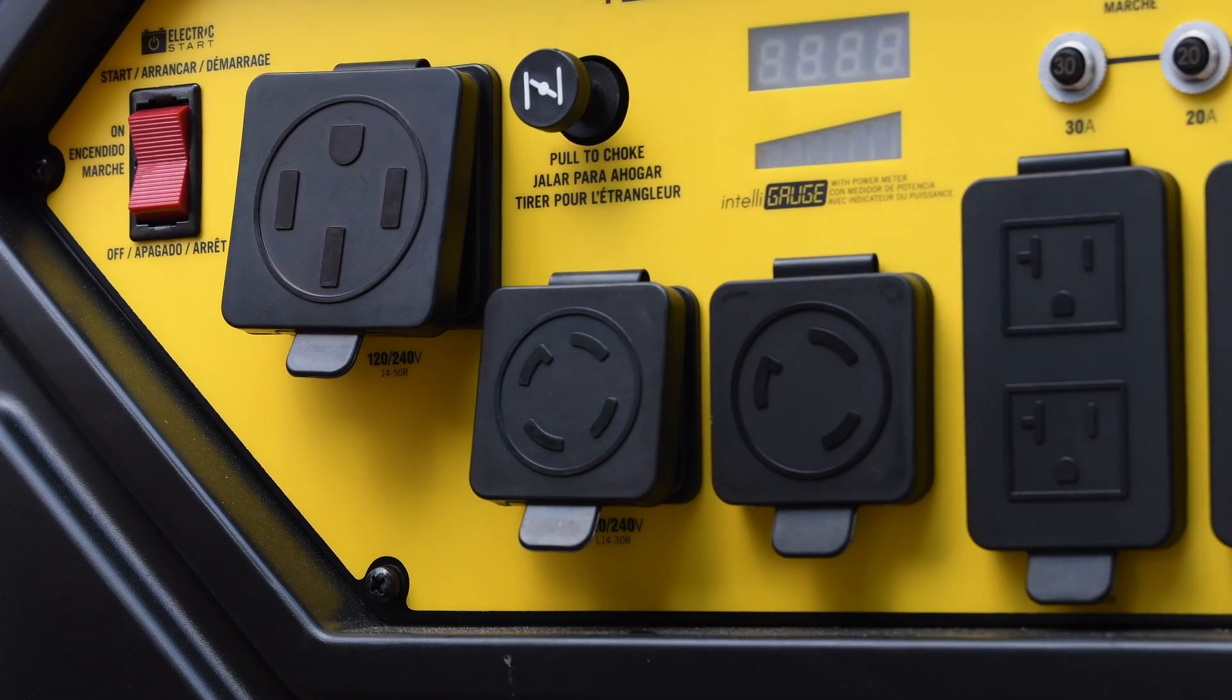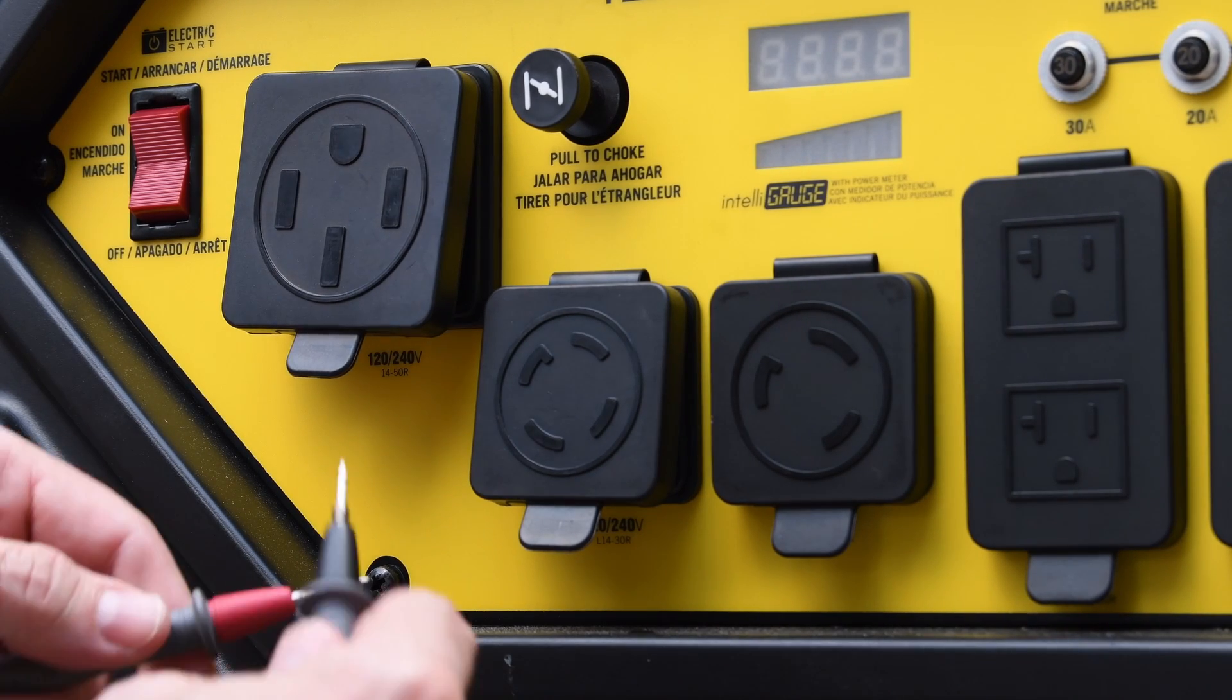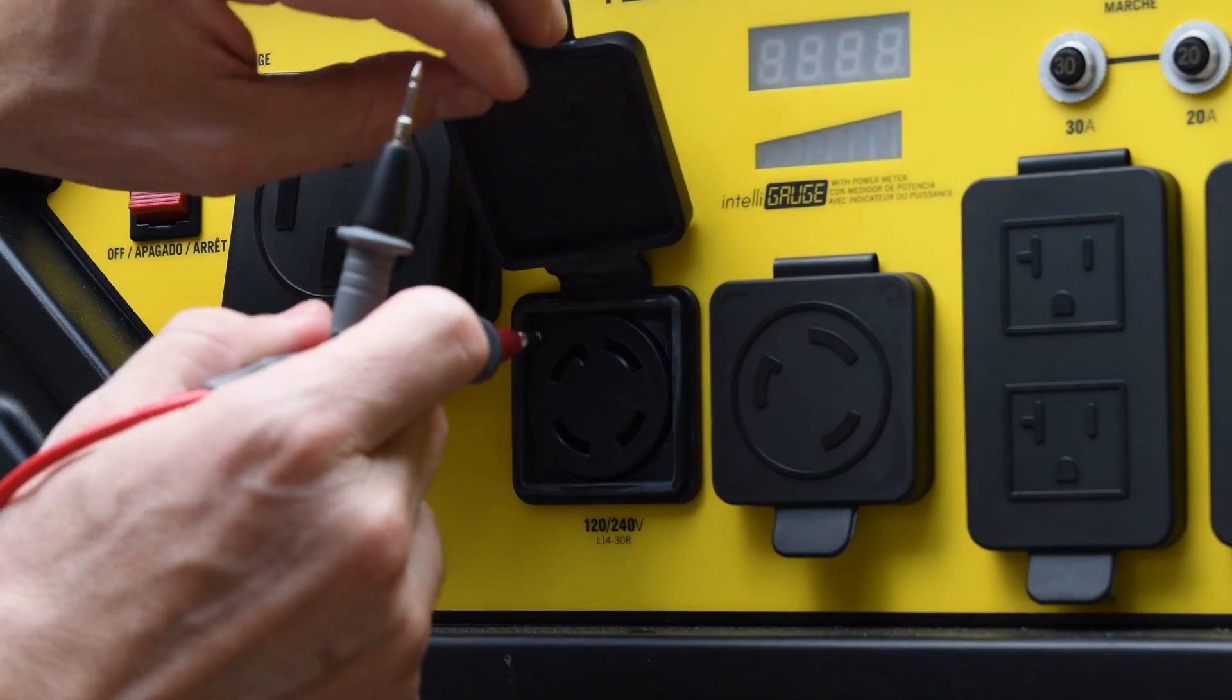So in a neutral bonded generator, neutral and ground are bonded. So let's check it out.